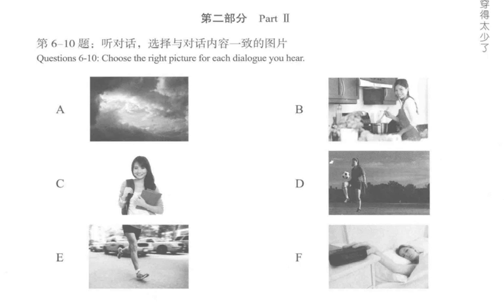七：你做饭做得怎么样？不怎么样，我妻子比我做得好。How well do you cook? Not very well — my wife cooks better than I do.